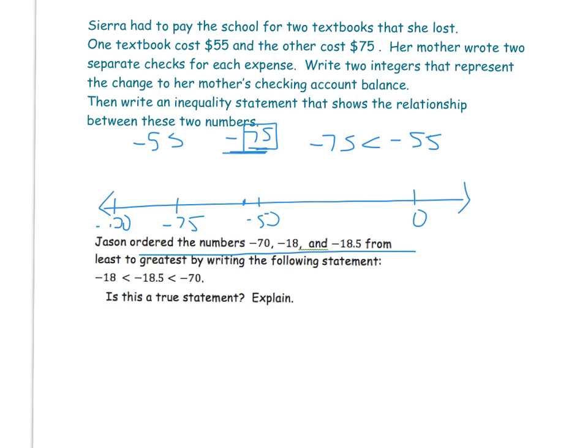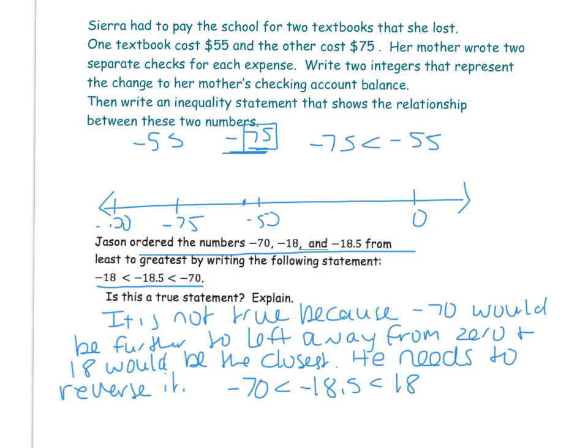Jared ordered the numbers negative 70, negative 18, and negative 18.5 like this. Is it true? Explain. Please pause and see if you can do this on your own. Okay, so this is how I explained it. And your words don't have to be exactly mine. Matter of fact, I'd rather they not be exactly mine. I'd rather you put them in your own words. But here, if I'm thinking of my number line, negative 70 is the one that is furthest to the left. So it would be like right there, where negative 18.5 would be a little bit past negative 18. So he had this completely reversed. So I said it is not true because negative 70 would be further to the left away from 0, and 18 would be the closest. He needs to reverse it. So negative 70 is less than negative 18.5, which is less than 18.